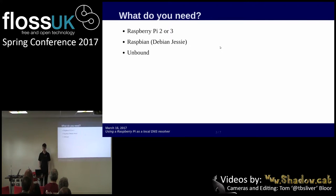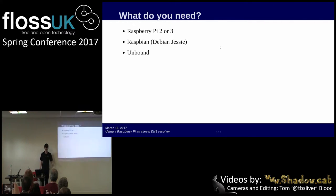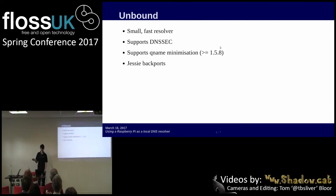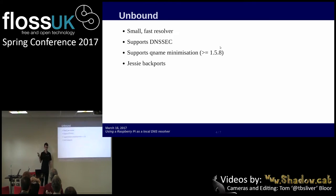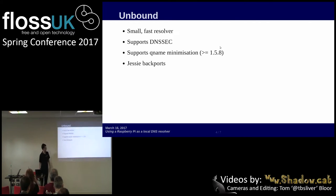What you need: you need a Raspberry Pi 2 or 3. You can probably use a Zero but it might not have enough memory. Raspbian, or you can use Debian Jessie — it's pretty much the same thing — and a piece of software called Unbound. Unbound is basically a small, fast resolver. It supports DNSSEC, which allows you to know that the record you requested actually came from the place you requested it from and hasn't been modified in transit. It doesn't provide any end-to-end encryption so anybody can snoop on it, but they can't change it.